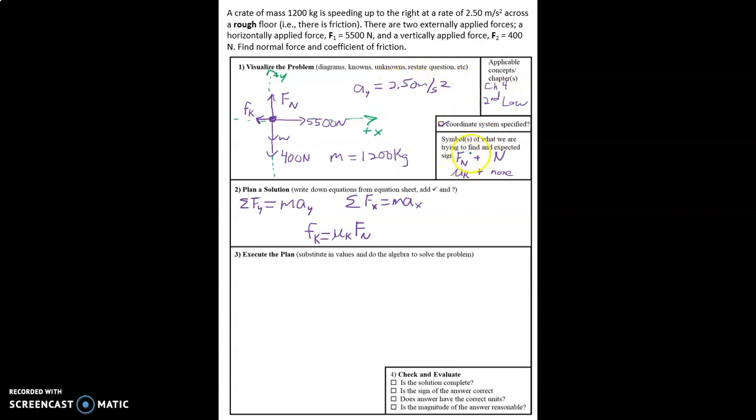We're going to be looking for the normal force and the coefficient of kinetic friction. Both of those are going to be positive. The magnitude of the normal force, which is what we're always finding using the second law, is always the magnitude so it's going to come out positive. We're getting the normal force in units of newtons and no units for the coefficient of friction.